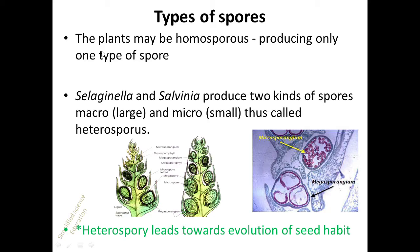Pteridophytes have two types of spores: homospores or heterospores. A plant is homosporous if it produces only one type of spore, and heterosporous if it produces two types. Selaginella and Salvinia produce two kinds of spores: megaspores, which are larger, and microspores, which are smaller. The microsporangium contains microspores and the megasporangium contains megaspores.